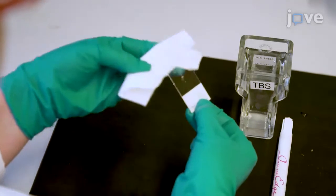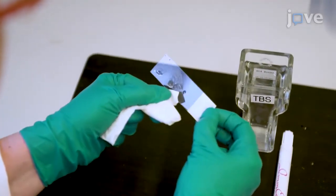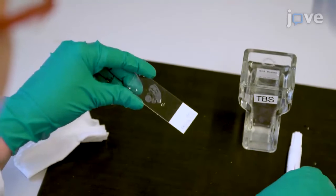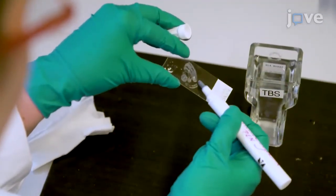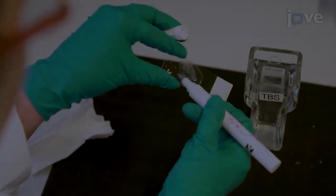Using rolled filter paper or a cotton swab, carefully remove any liquid between the sections on the slides, making sure to leave the sections hydrated. Then, use a hydrophobic barrier pen to create a barrier around each section.